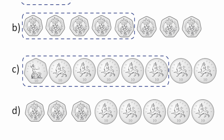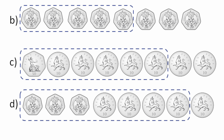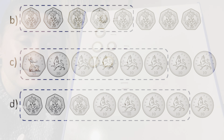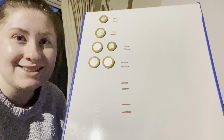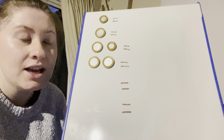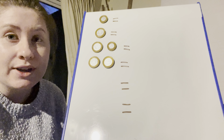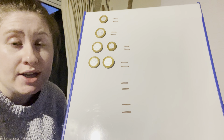Let's look at D. It starts at 20p. Let's count together: 20p, 40p, 60p — now it's going to tens — 70p, 80p, 90p, 100p. 100 pence is the same as a pound.